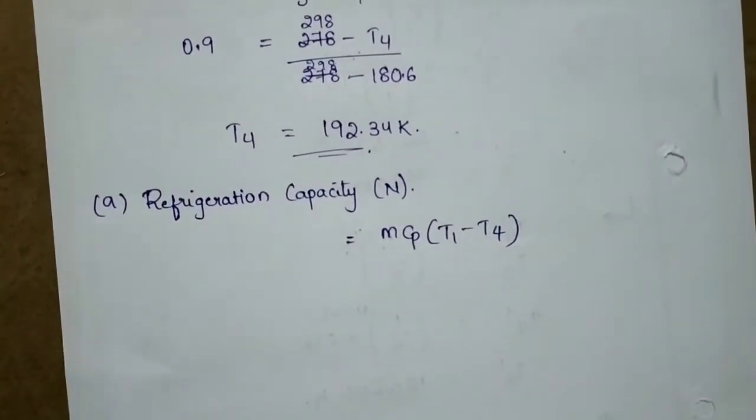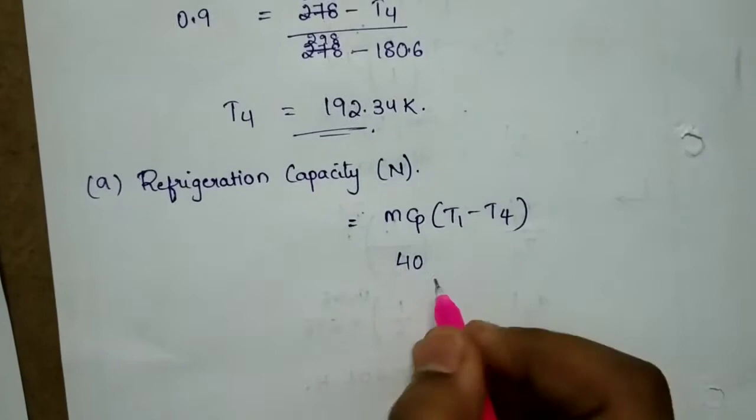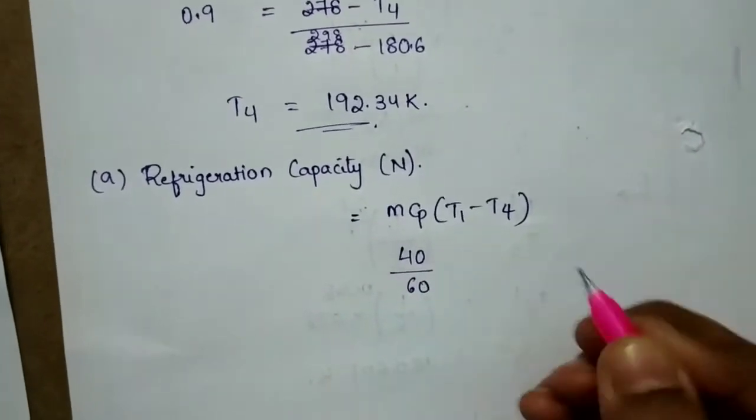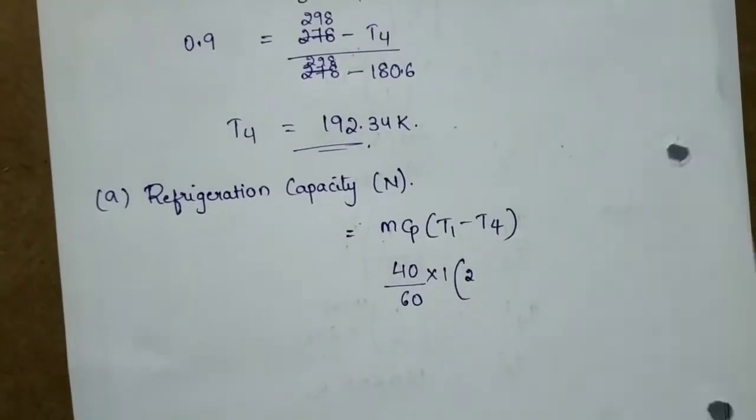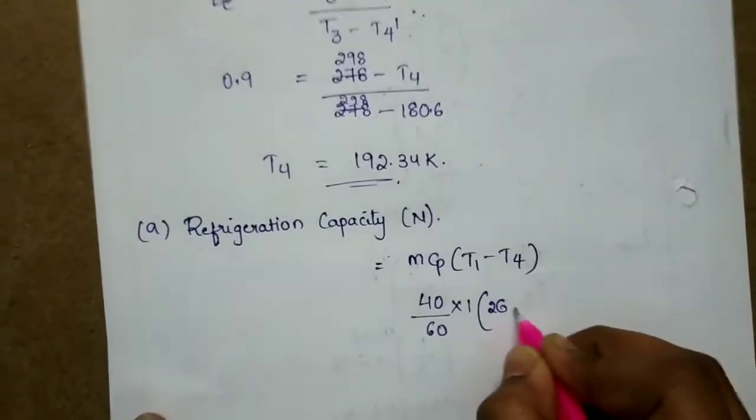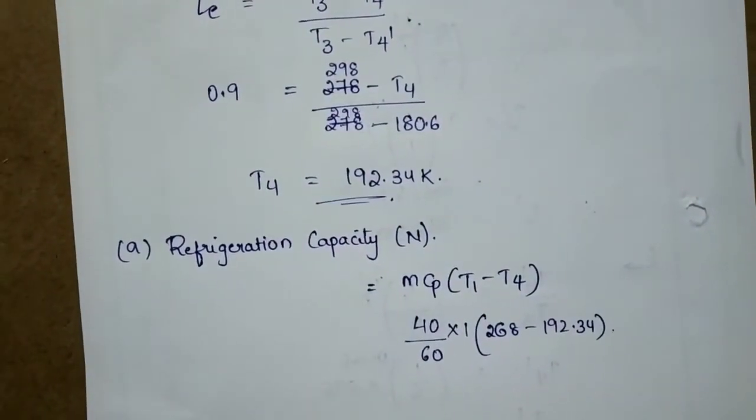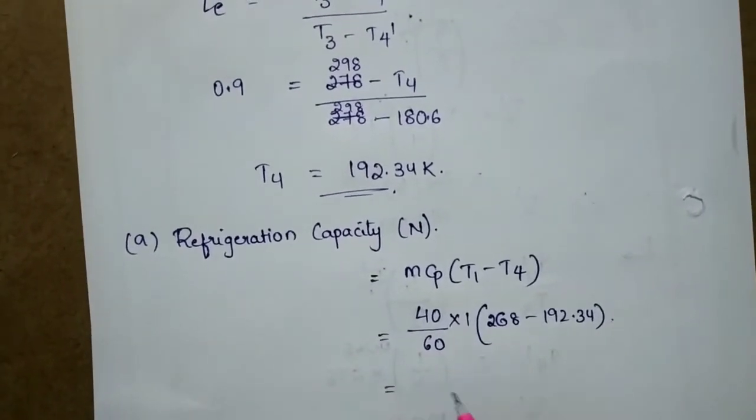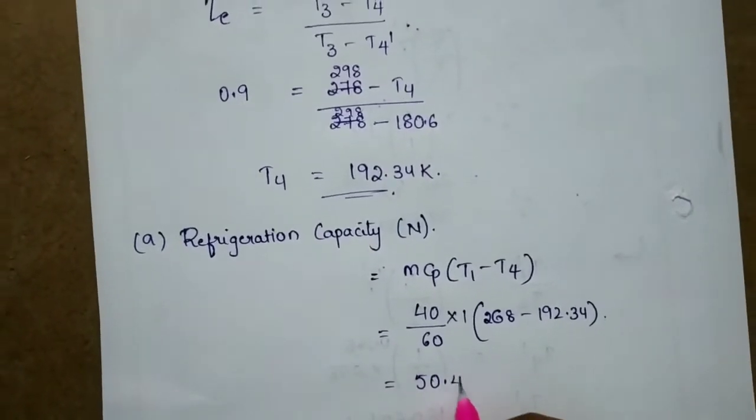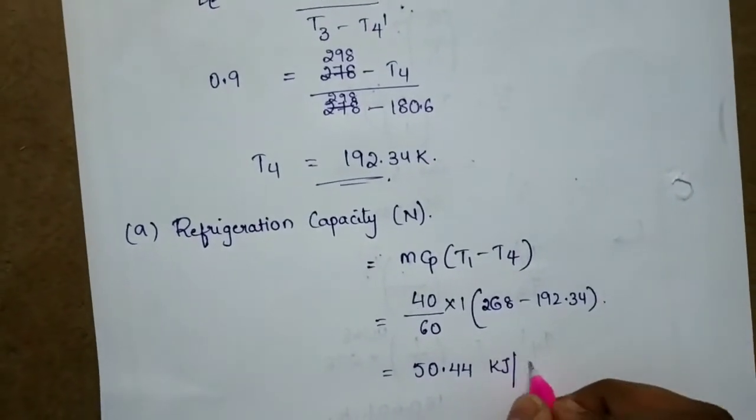M is 40 kg per minute, so 40 by 60 into Cp. Cp is 1 kilojoule per kg Kelvin. T1 is 268 minus T4 which is 192.34. This equals 50.44 kilojoules per second.